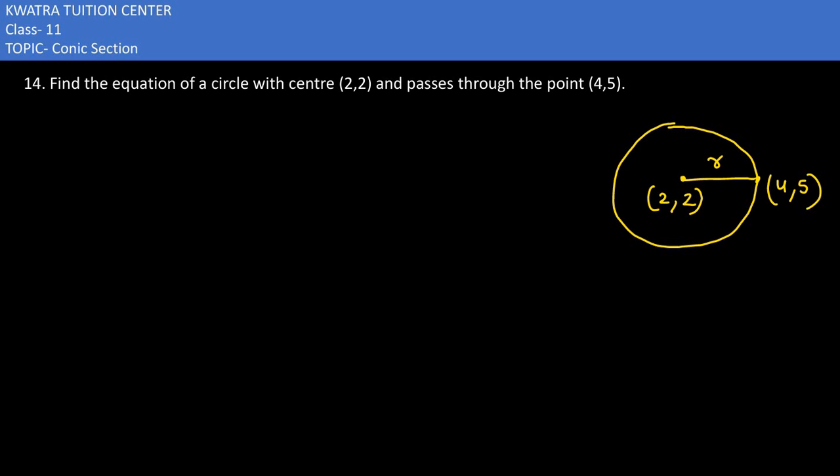Now the 14th problem asks to find the equation of a circle with center (2,2) that passes through the point (4,5). How do we form the equation of circle here?